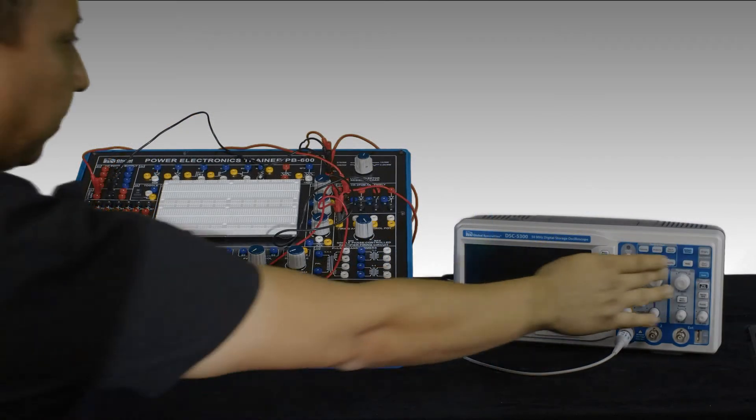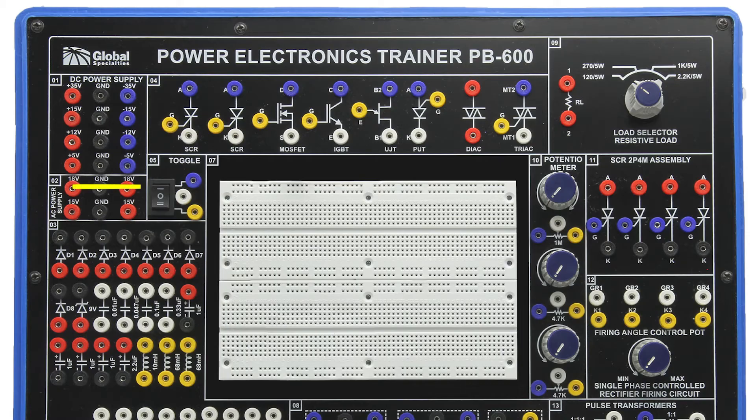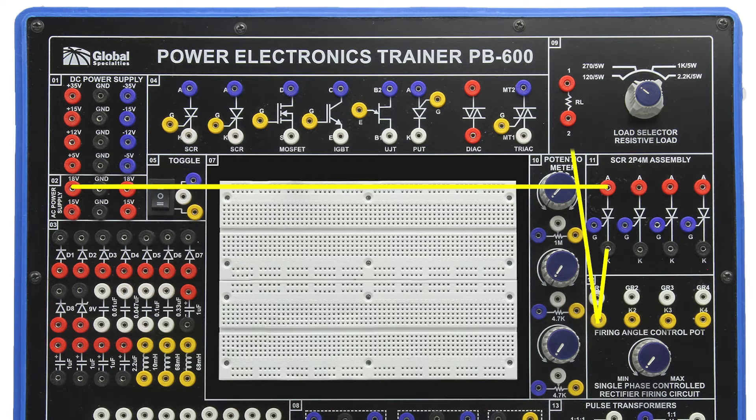To do this, we've connected the 18VAC power supply to the anode of an SCR. The cathode of the SCR is connected to the control which goes out to a one kilo-ohm load. The other terminal of the control is connected to the gate of the SCR.